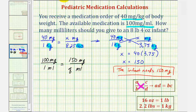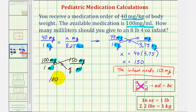So 150 milligrams to Q number of milliliters. Notice in this last proportion, we do have the same units on top and the same units on the bottom, so we can cross multiply and solve for Q to answer the final question. Q times 100 must equal 1 times 150, so 100Q equals 150.